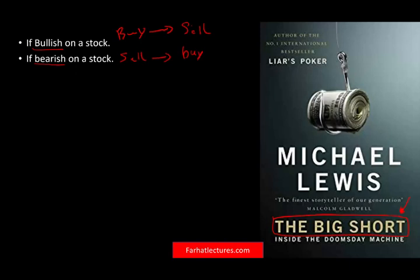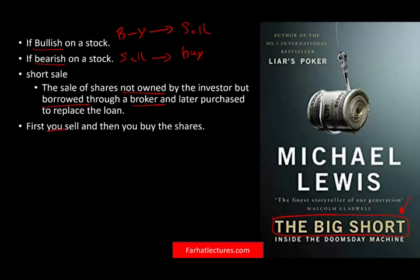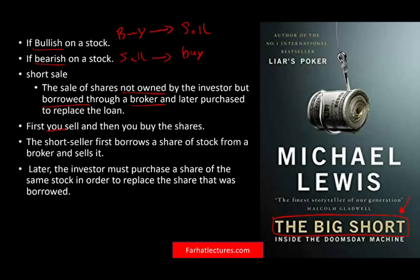But if you don't own anything to sell, you borrow it from a broker, sell it immediately, and keep the cash. A short sale is the sale of shares not owned by the investor but borrowed through a broker and later purchased to replace them. The short seller first borrows the shares from the stockbroker, then sells. The risk is huge because the stock could go down to zero — a maximum profit of $65 on a $65 stock.